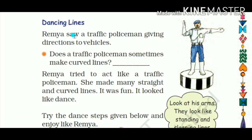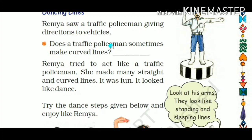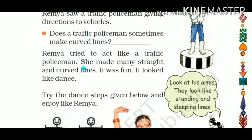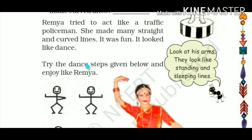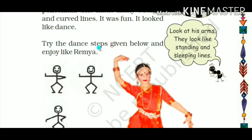Now comes the dancing line activity. A traffic policeman gives directions — you must have seen traffic police standing and signaling with their hands to direct traffic. They make different angles with their arms, forming straight lines and sometimes curved lines. Raima tried to act like a traffic policeman and made many straight and curved lines — it looked like dancing!